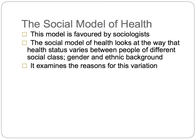So what is the social model of health? This is a model favoured by sociologists. It looks at the way that health status varies between people of different social class, gender and ethnic background. By health status, we mean an individual's experience of health. Sociologists look at health outcomes of different social groups and note patterns of inequality between these groups, as well as examining the reasons for these variations.